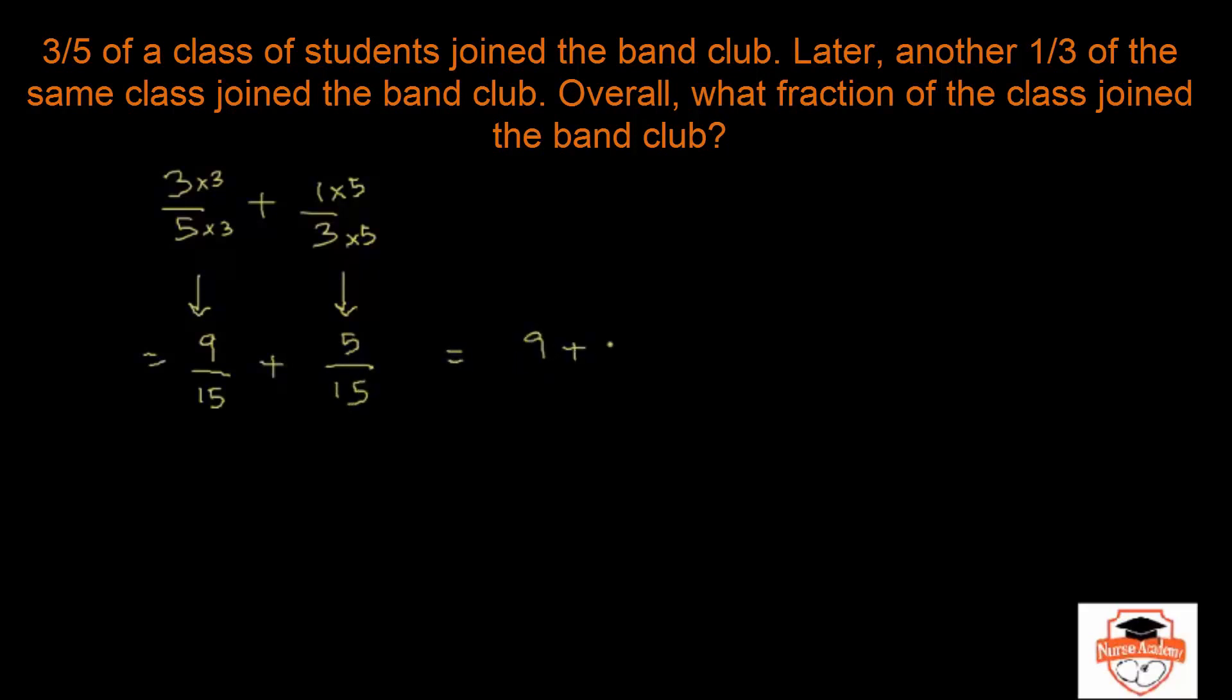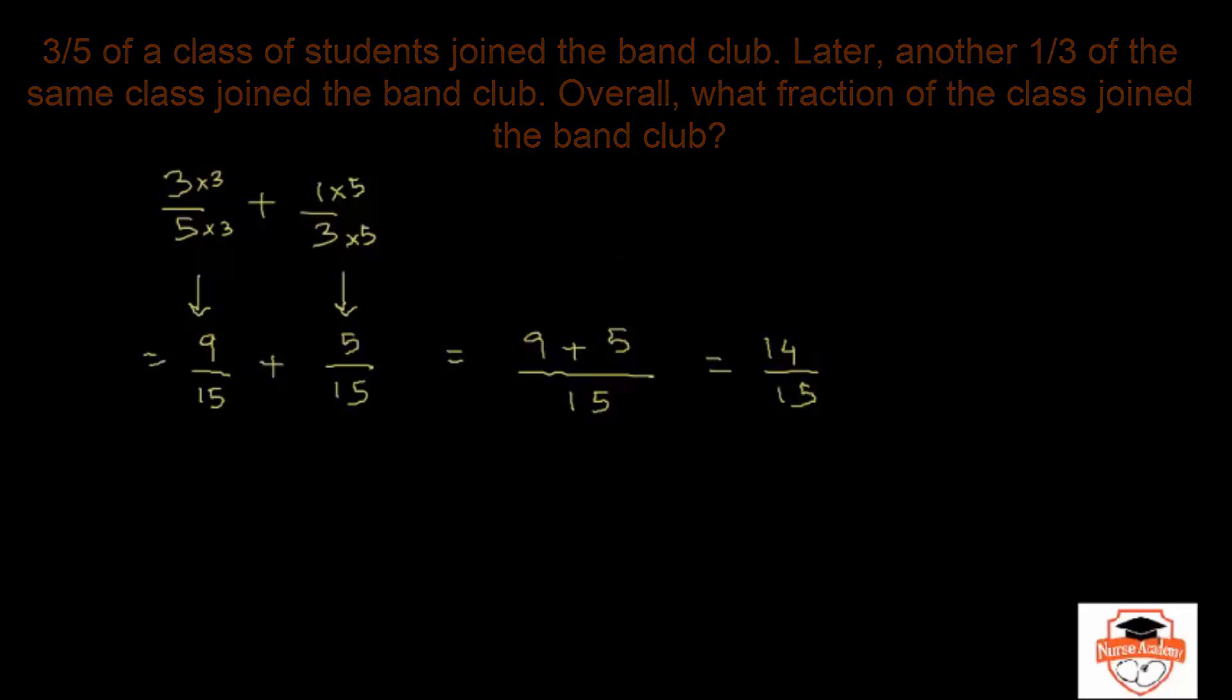So we have this as 3 times 3 is 9 over 15 plus this one's 5 over 15. So you have 9 plus 5 all over 15, that's 14 over 15. So 14/15 of the class joined the band club.